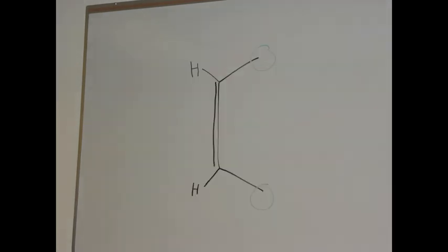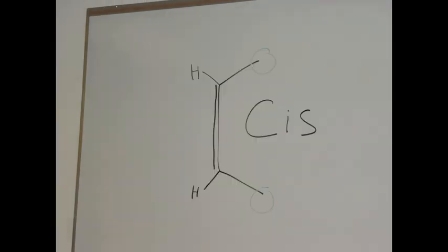As we can see here, the two highest priority groups are the methyl groups facing the same direction across the double bond, making this a cis molecule.